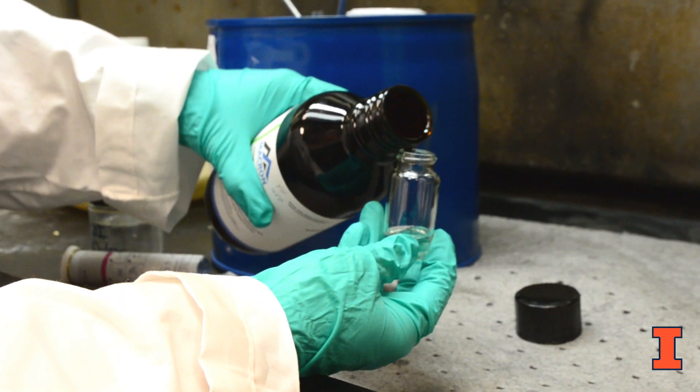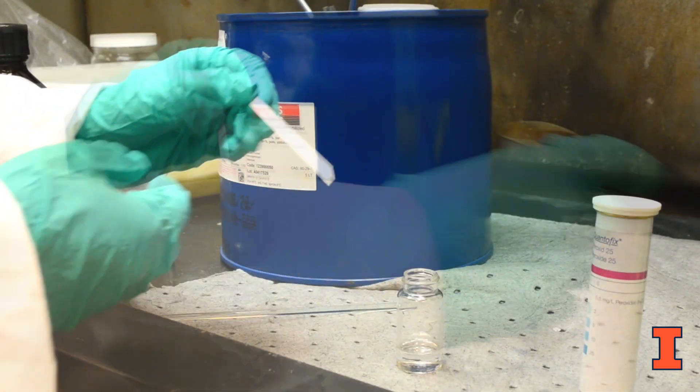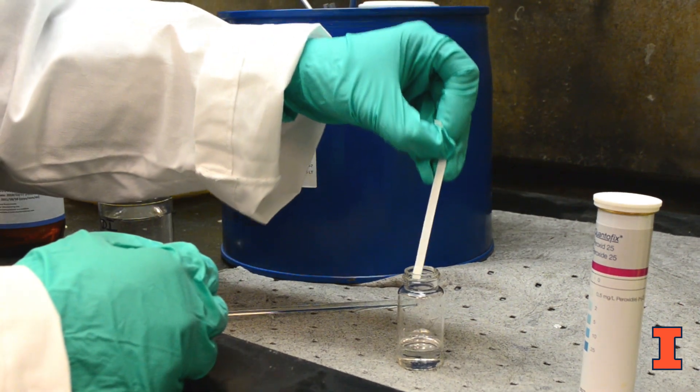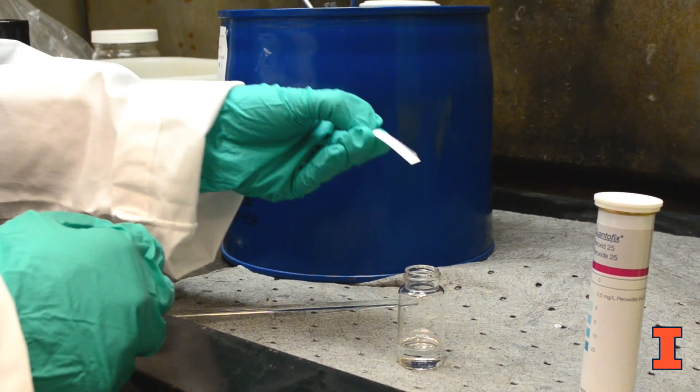To test for peroxides, take a small aliquot of your chemical in a beaker. Remove a test strip and dip into the solvent for about a second. Shake off any excess solvent.